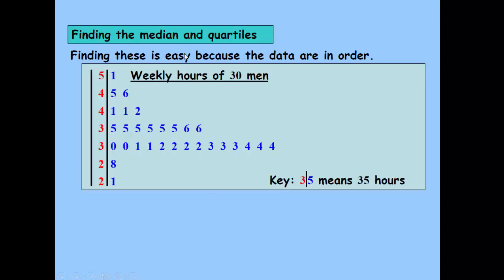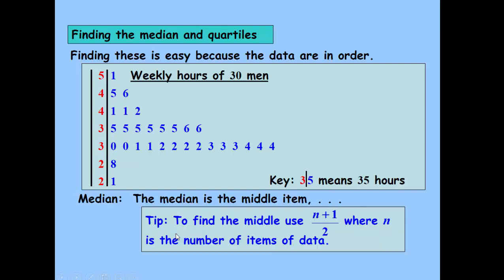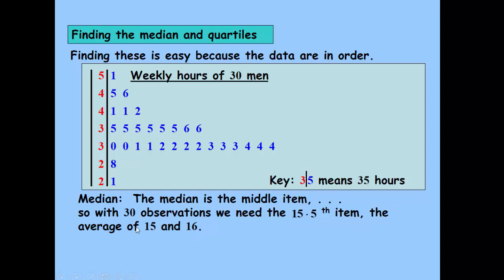Finding the median and the quartiles is very easy from a stem and leaf diagram. Median is the middle term. This is the formula here: n+1 over 2, where n is the number of items of data. So we have 30 men. 30 plus 1 gives us 31, over 2 gives us 15.5.